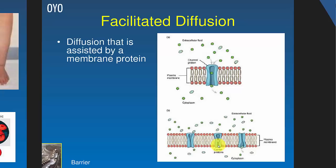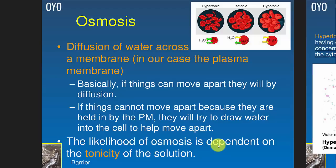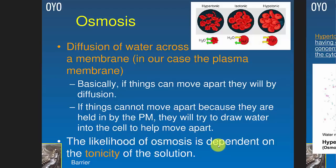Facilitated diffusion is when there's a protein tunnel helping diffusion — for example, glucose diffuses from the gut into blood through a tunnel. It still moves down its concentration gradient (high to low concentration), just assisted by a tunnel. Osmosis is related: if things can't diffuse out of a cell, they'll draw water toward them instead. Things like to spread apart, and if they can't spread apart they'll draw water to make the cell bigger so they can spread apart. Technically, water likes to move toward higher concentration.